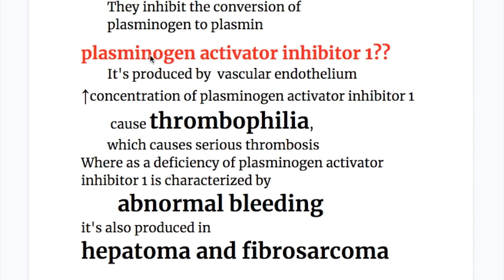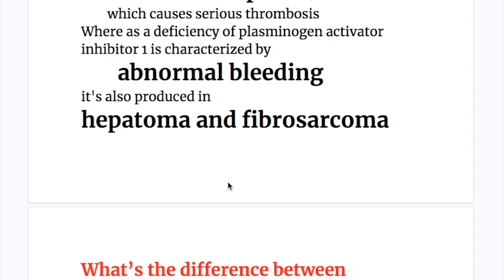What is plasminogen activator inhibitor 1 (PAI-1)? PAI-1 is produced by vascular endothelium, similar to plasminogen. An increased concentration of PAI-1 causes thrombophilia, leading to serious thrombosis. Deficiency of PAI-1 is characterized by abnormal bleeding. PAI-1 is also produced by hepatoma and fibrosarcoma.